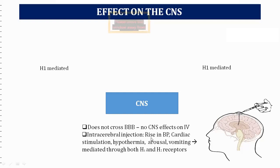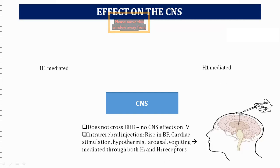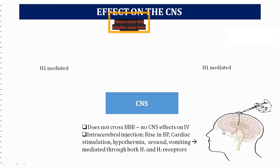Intracerebral histamine also causes hypothermia, arousal, and vomiting — all mediated by H1 and H2 receptors in the midbrain and hypothalamus, where various regulatory centers are located. Histamine affects hypothalamic hormone release, which in turn affects anterior pituitary hormones and thus overall body functions.